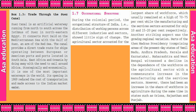Occupational Structure. During the colonial period, the occupational structure of India — that is, the distribution of working persons across different industries and sectors — showed little sign of change. The agricultural sector accounted for the largest share of workforce, usually remaining at 70% to 75%, while the manufacturing and service sectors accounted for only 10% to 15% and 20% respectively.